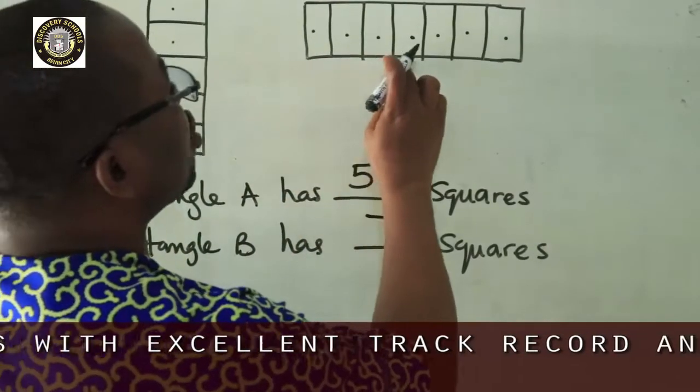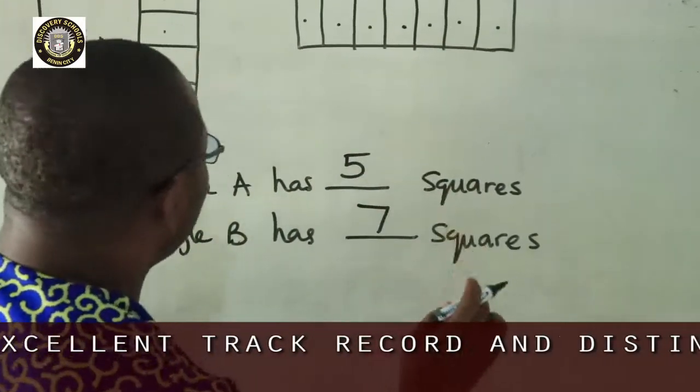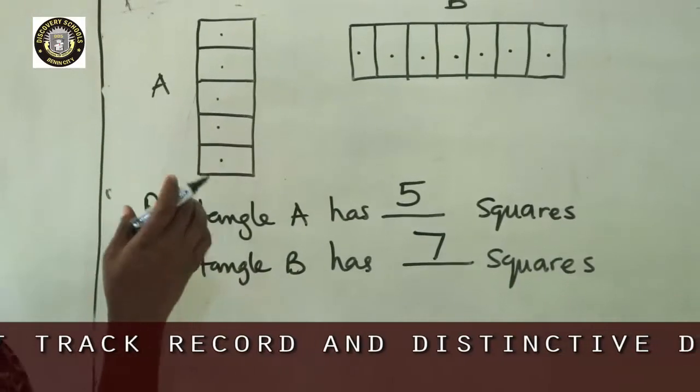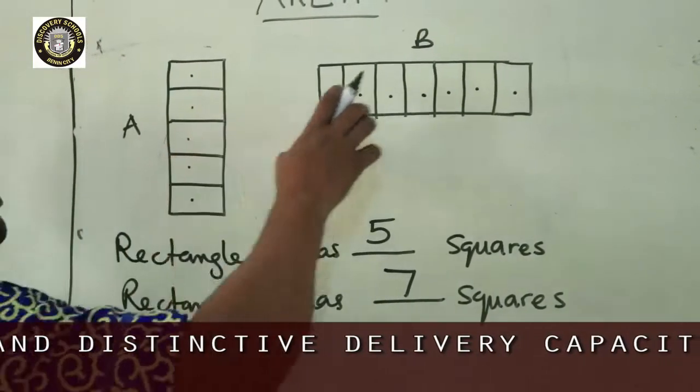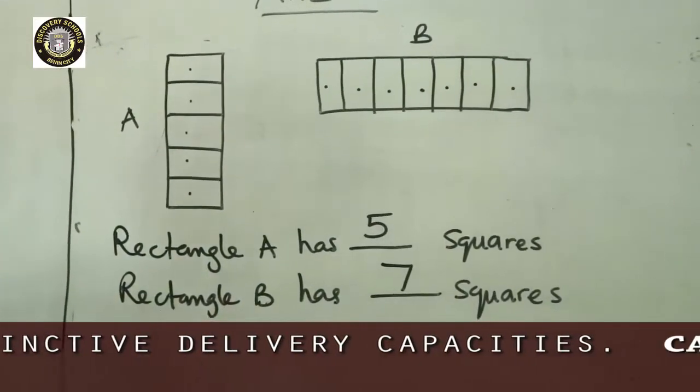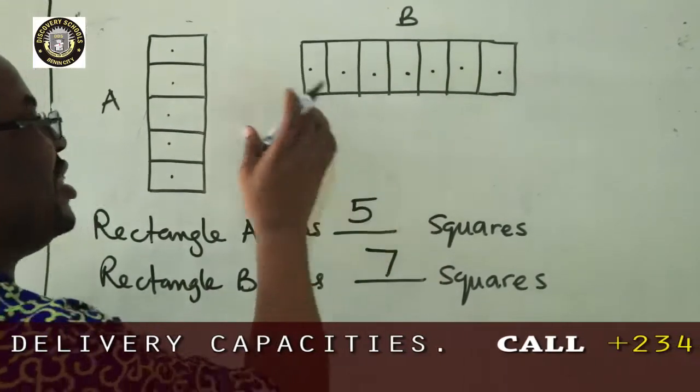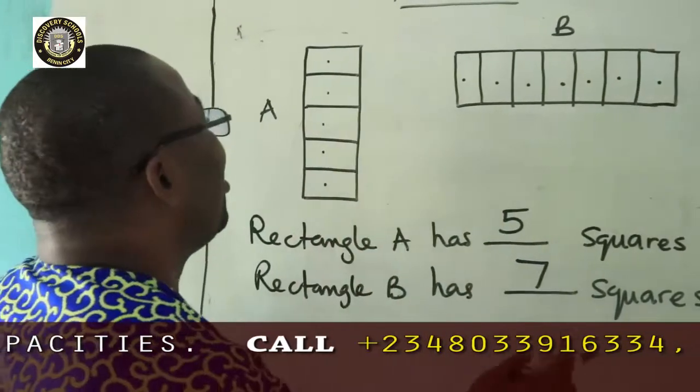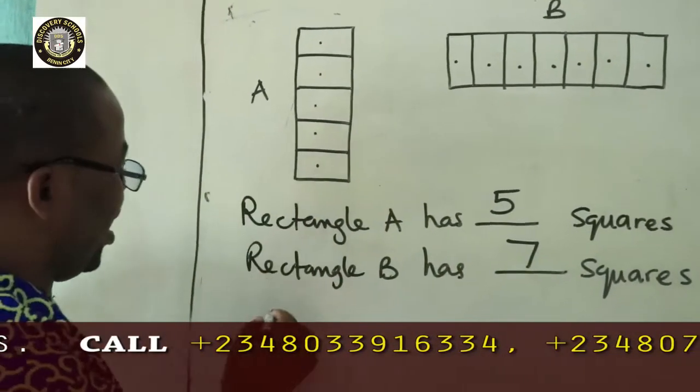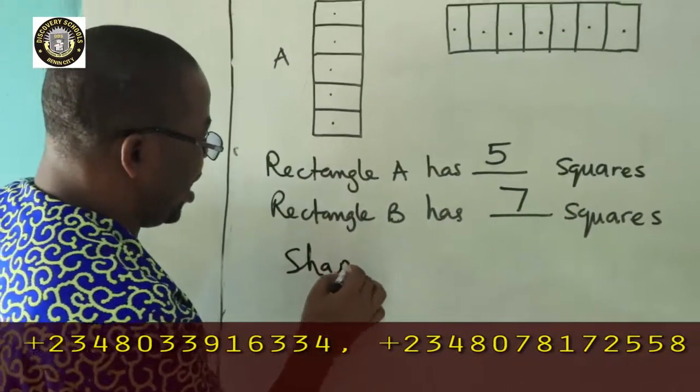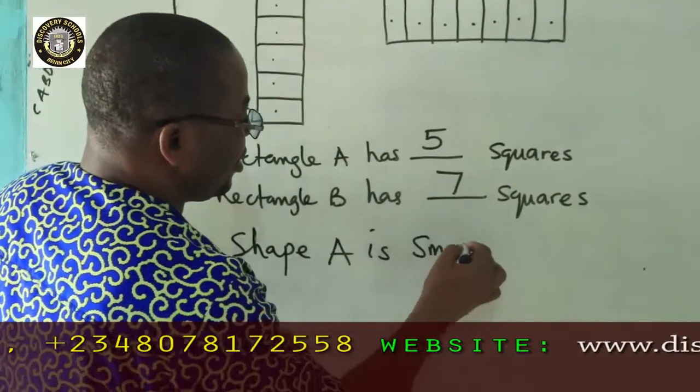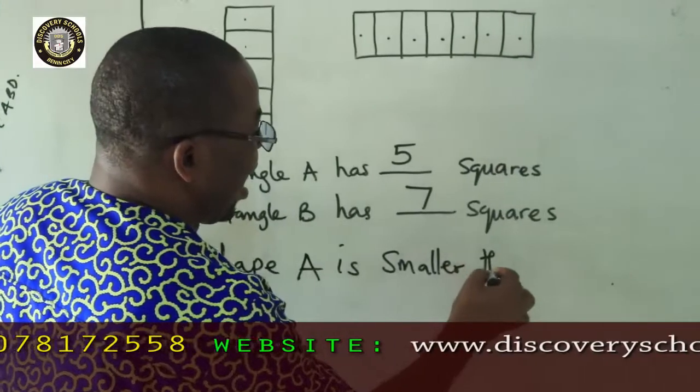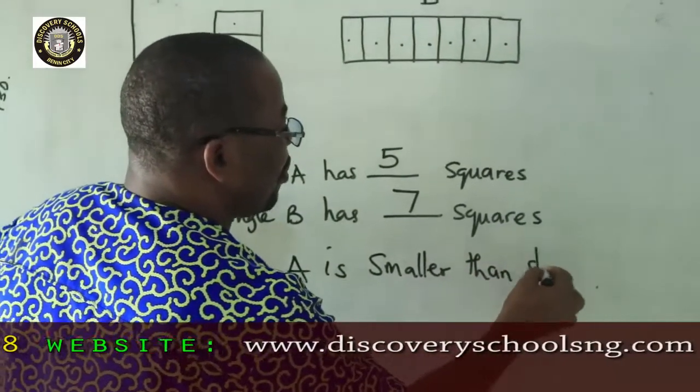The area of rectangle B is what? 7 squares. Good. Then we want to compare this area. Rectangle A and rectangle B. Which one is bigger? The one with larger squares is bigger. The one with smaller squares is smaller. So we say shape A is smaller than shape B.